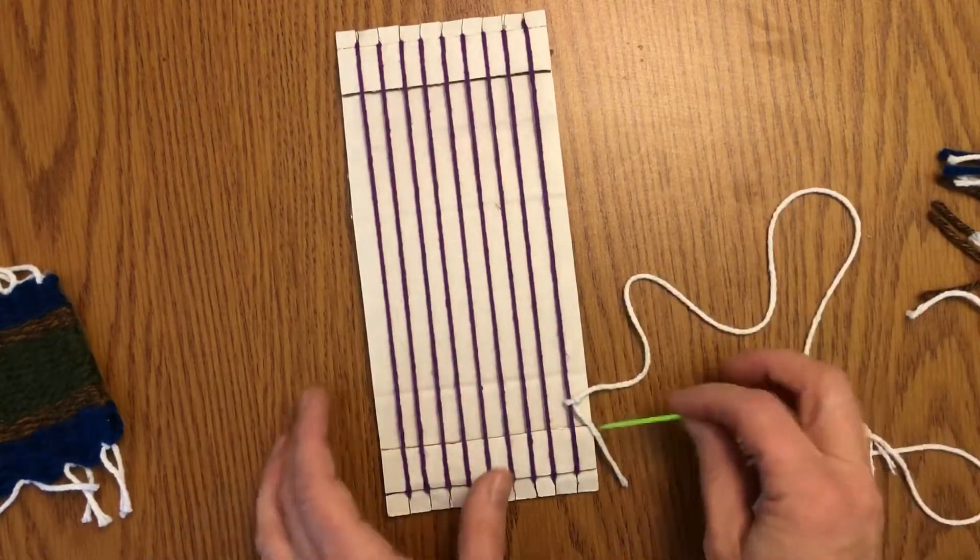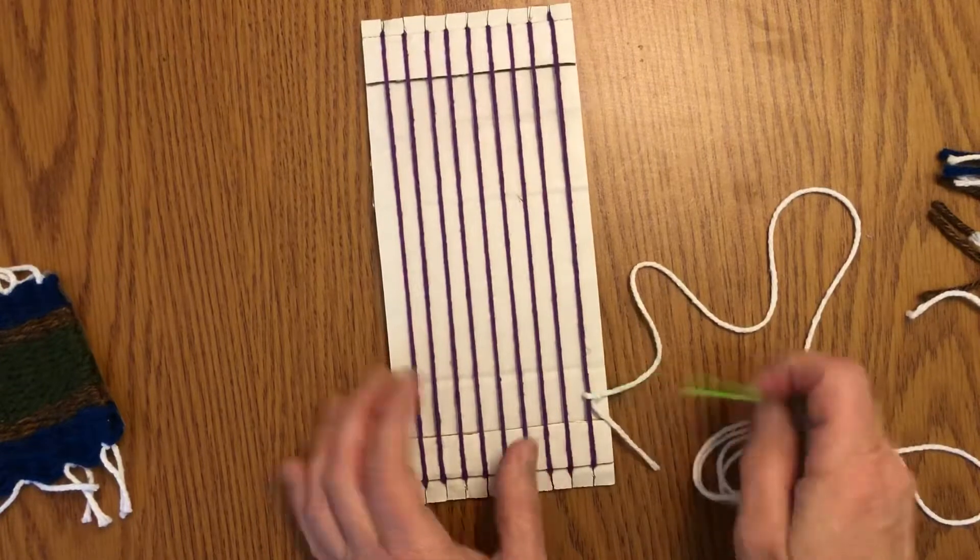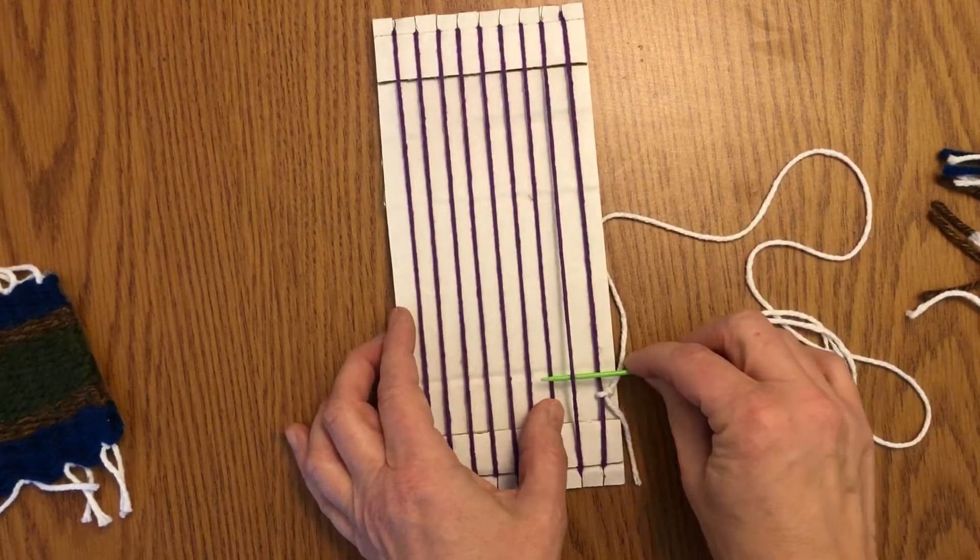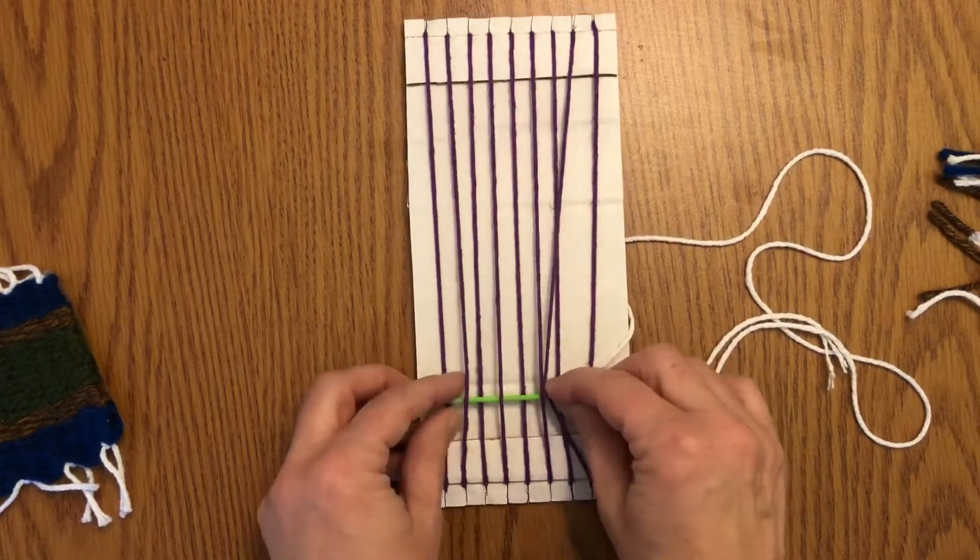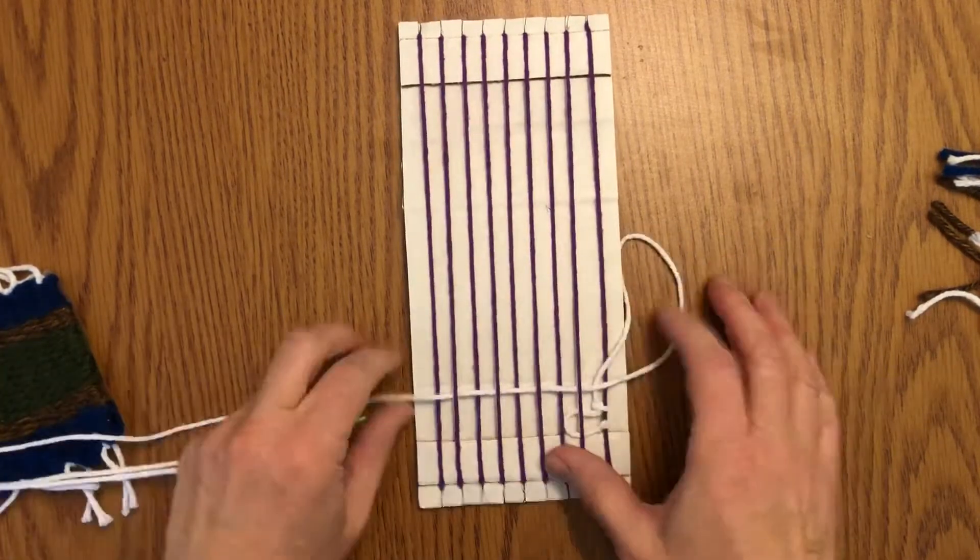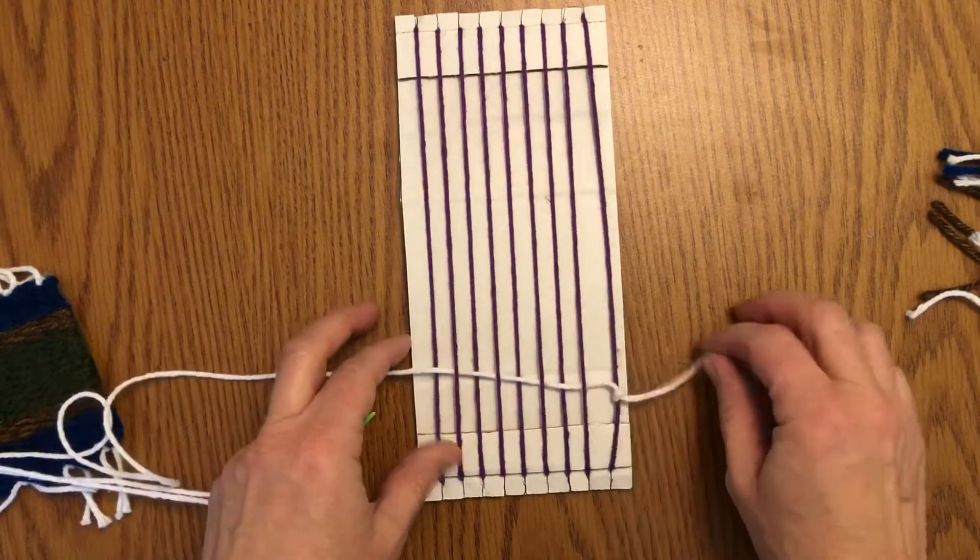My string is tied on and I can just go under over, under over all the way across. Then I'm going to pull it through, and every single time I want to make sure that I'm pushing down my weft thread.